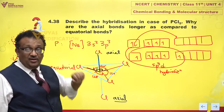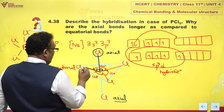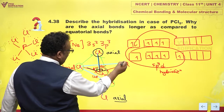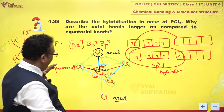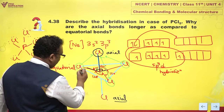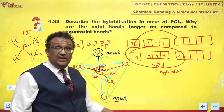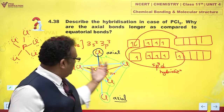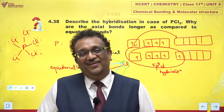Why are axial bonds longer? Because these axial bonds face repulsion from all three equatorial chlorine atoms — they face more repulsion from all three sides. This is a trigonal bipyramidal structure. Since axial chlorine atoms face stronger repulsions from the remaining chlorine atoms, they are pushed slightly away. That is why the axial bond becomes slightly longer and weaker.